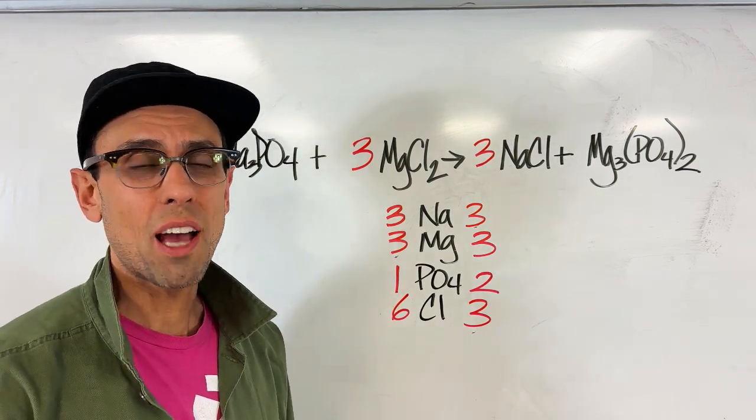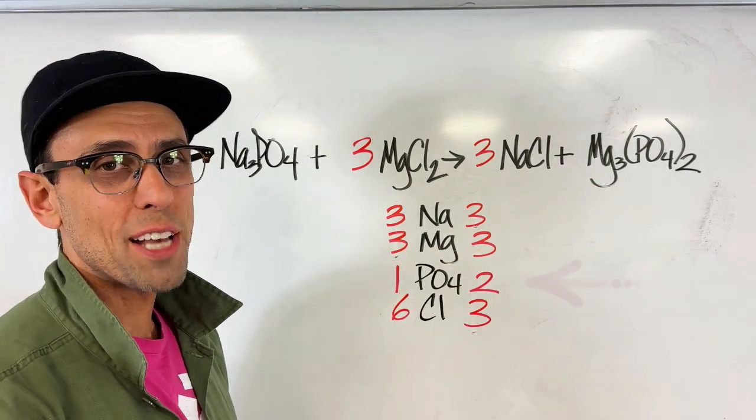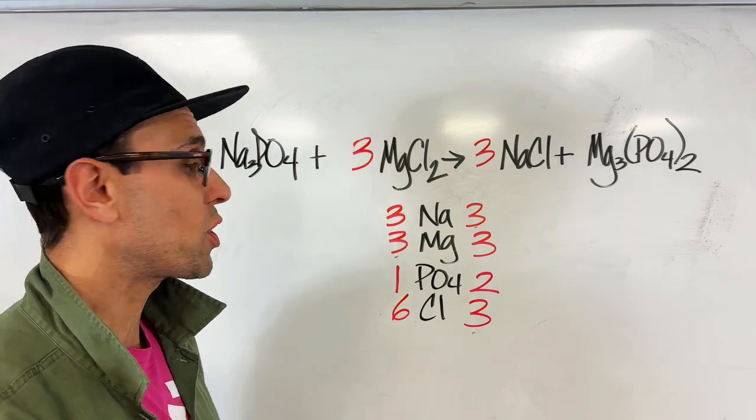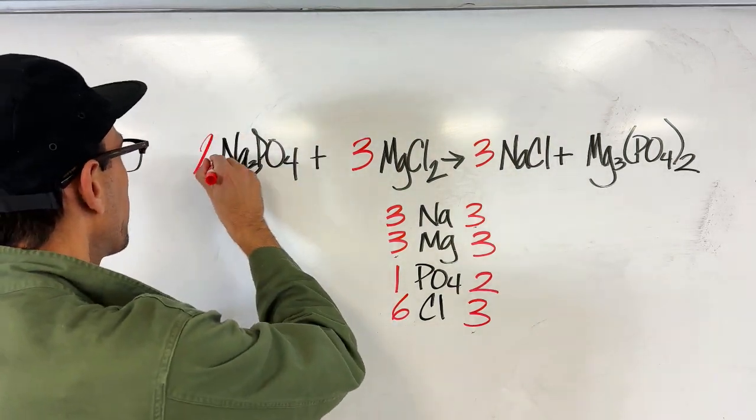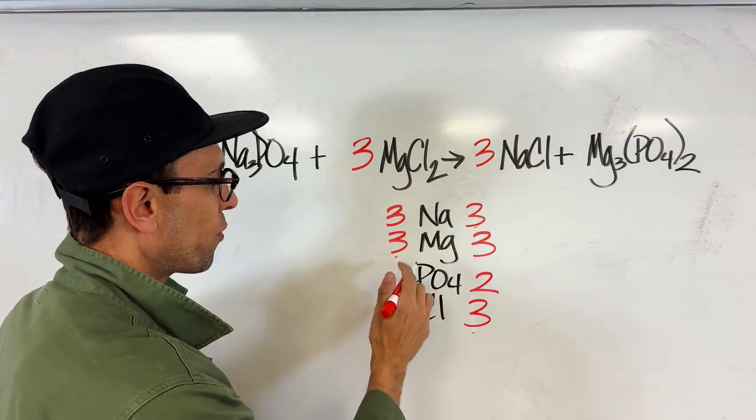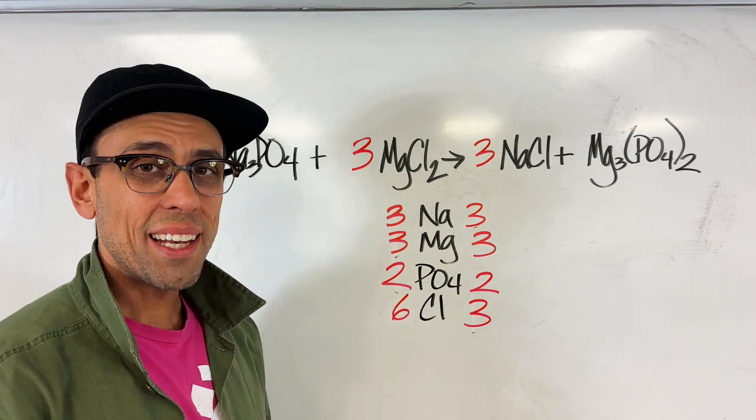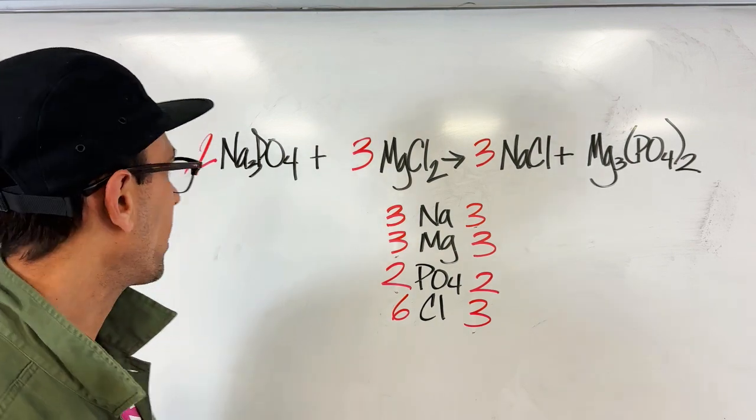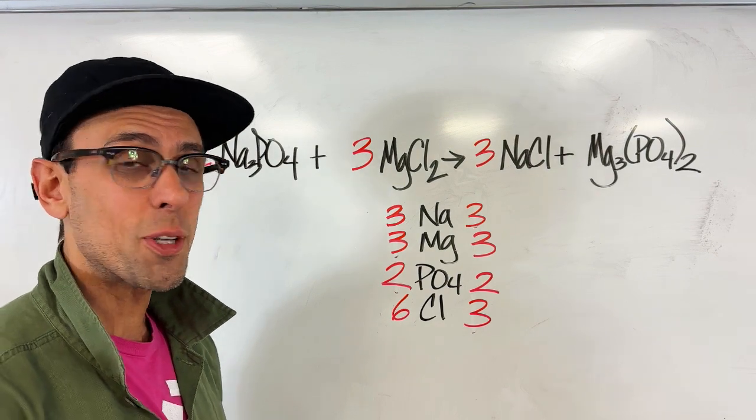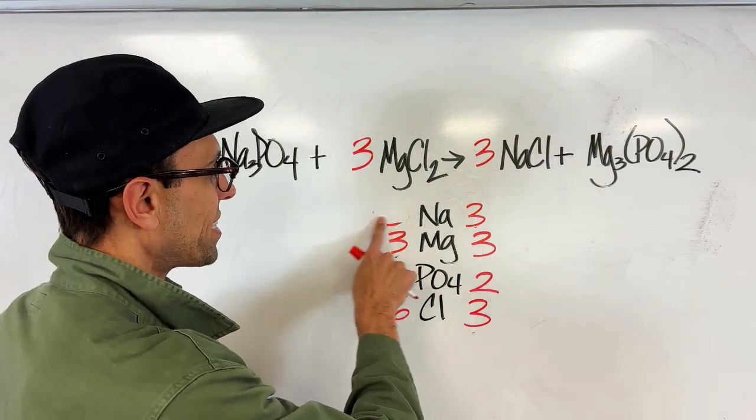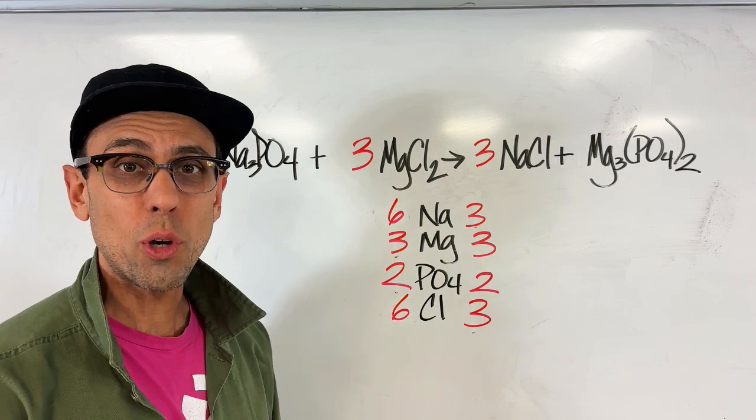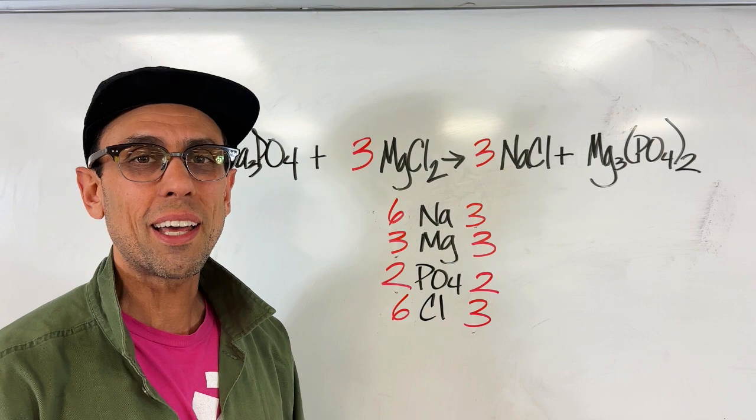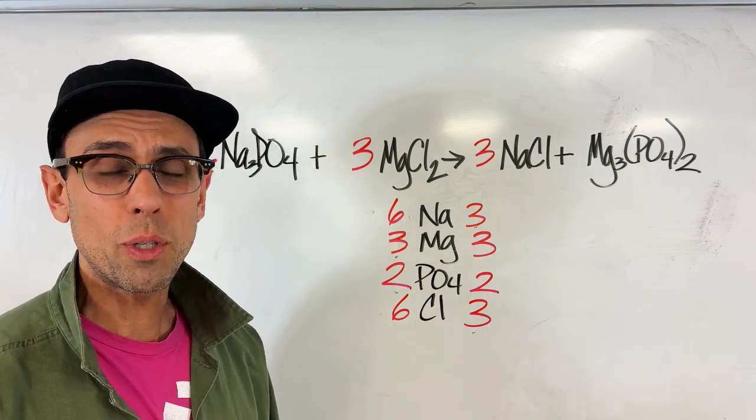Now we're going to move on to the polyatomic ion phosphate. There are two phosphates on the right side, only one as a reactant, so we're going to use a coefficient of two here, and that's going to give us two phosphates. But again, when we put a coefficient in front of a compound, we have to distribute that number to everything. So the two will now be multiplied by the three sodiums, and that's going to update this table to six on the reactant side for sodium. So we thought we had resolved that, now we've created a new issue, but that's not a big deal at all. It happens all the time in balancing. We just need to be patient.